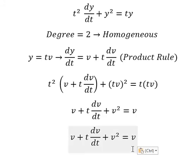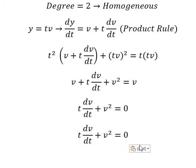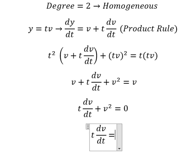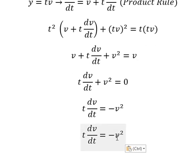After simplification, v on the right gives us v - v equals zero. Moving v² to the right, we get t(dv/dt) + v² = 0, or t(dv/dt) = -v². Next, we separate variables: dv/v² on the left and -dt/t on the right.